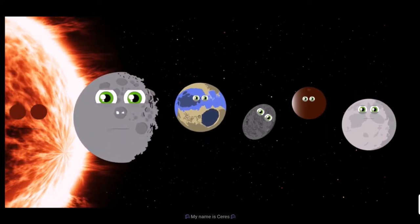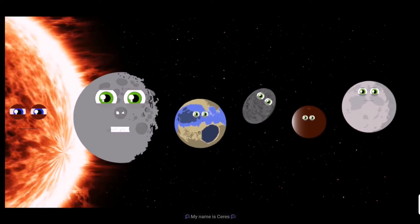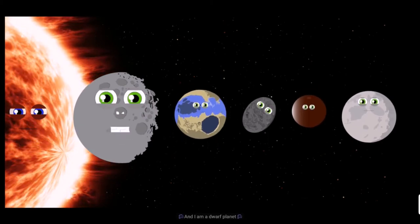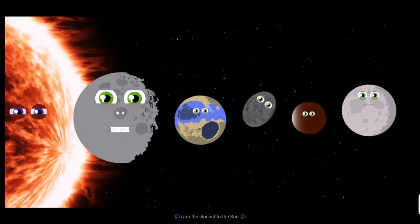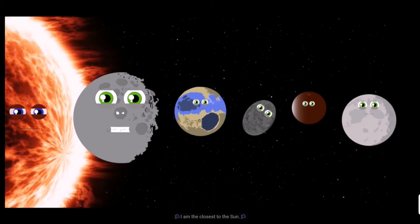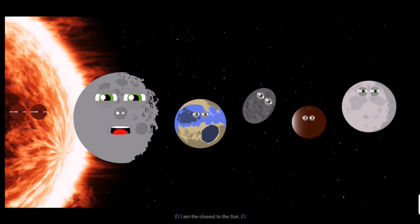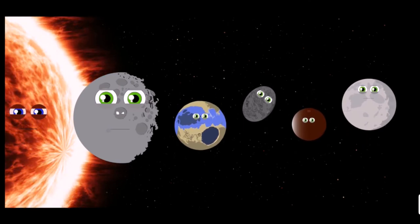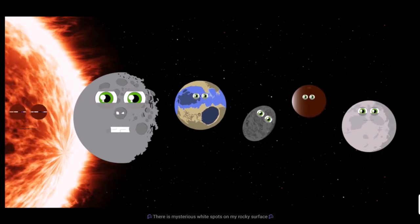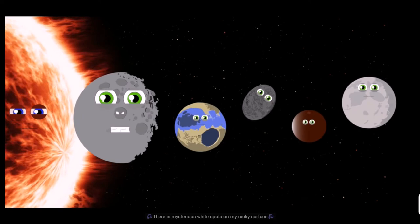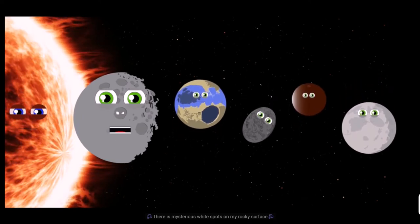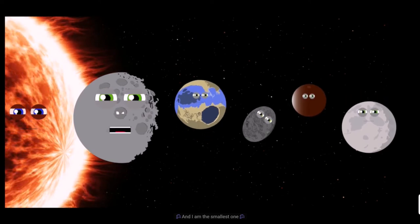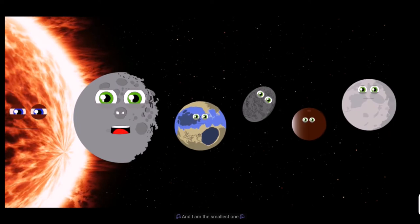My name is Ceres and I am a dwarf planet. I am the closest dwarf to the sun. There are mysterious white spots on my rocky surface and I am the smallest one.